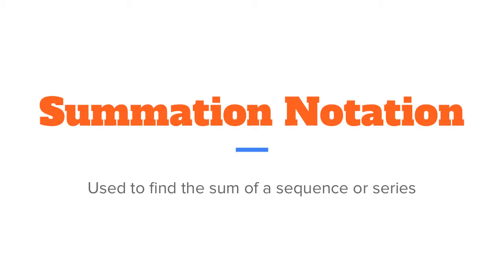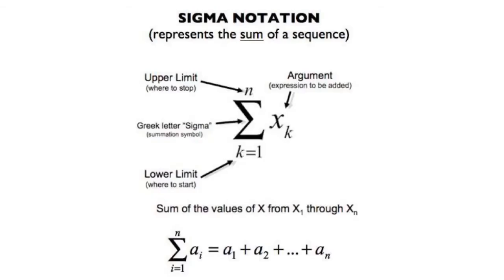The topic of this video is summation notation. We use summations to find the sum of a sequence or series. When we are writing using sigma notation, there are a lot of pieces that get put in place, so let's break it down and understand each part. The first part is the capital Greek letter sigma — it is the capital letter S, and we use it to represent a sum in summation notation.